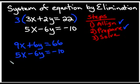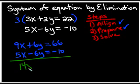Meaning that we're going to combine now. So when we combine, 9x and 5x is what? 14x. And the positive 6y and the minus 6y will cancel out. And that's going to leave us with an equal. 66 minus 10 is what? 52.